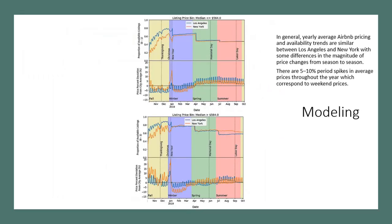So here is a daily pricing data in a chart format. Some of our findings are the average Airbnb pricing and availability trends are similar between Los Angeles and New York with some differences in the magnitude of price changes depending on the season. The other thing is that there is a 5% to 10% spike in the average prices on weekends, which is something that we would predict.